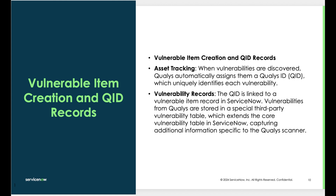How do we know what Qualys brought in? Qualys has a QID — a Qualys ID — that identifies the records brought in from Qualys. That's how you as an admin will know: this came in from Qualys, this came in from this scanner, this came in from that scanner. It's important when looking at that data to see the QID and then the number.